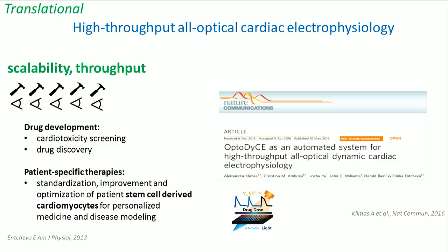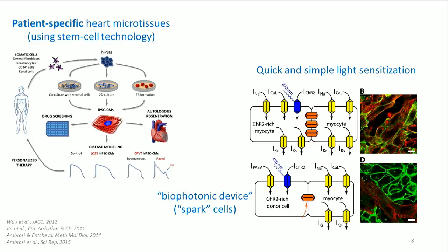We realized such a system that we named OptuDise — an all-optical, fully automated system for dynamic cardiac electrophysiology. We start from human patient skin or blood cells, and using stem cell technology differentiate them into cardiomyocytes, then build heart microtissues specific to that patient. We sensitize the cells by directly introducing optogenetic tools into the myocytes, or by using what we call SPARC cells — dedicated light-sensitive cells that are not necessarily myocytes — to build a biophotonic device at the tissue level.